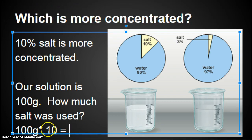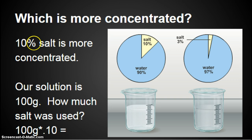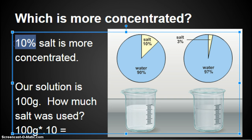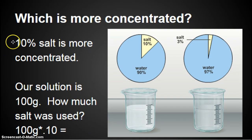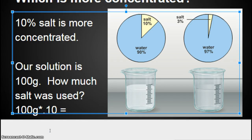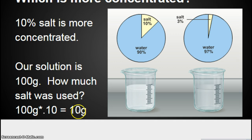The one on the left. And what percent salt is it? 10 percent versus only 3 percent concentration. So 10 percent salt is more concentrated. Our solution is 100 grams. How much salt was used? So we're going to go backwards a little bit. We know our total was 100 grams times 0.10. Where did I get 0.10 from? It was 10 percent. 10 percent divided by 100 gives you 0.10.